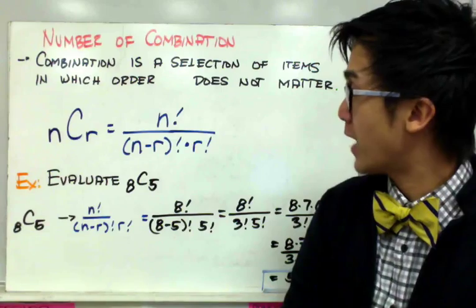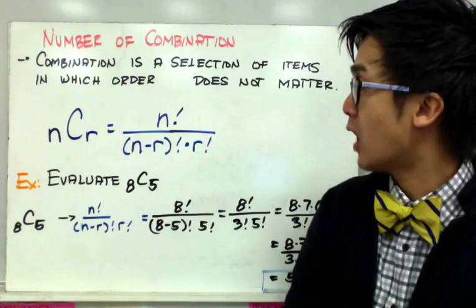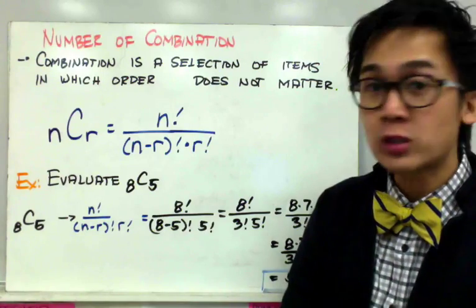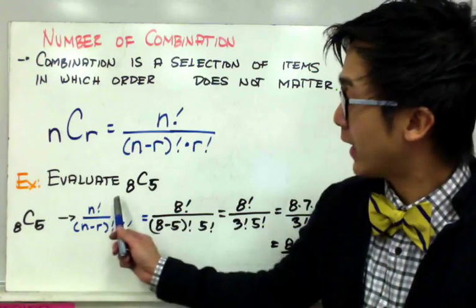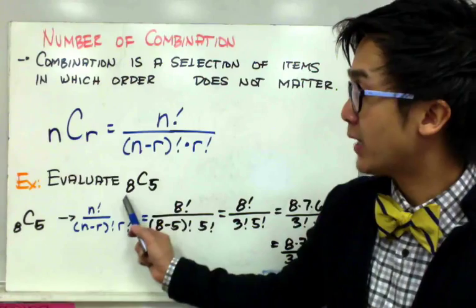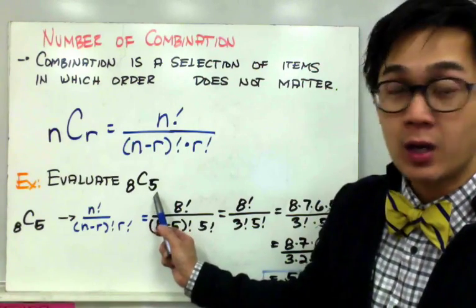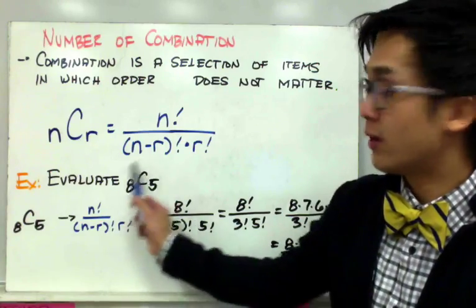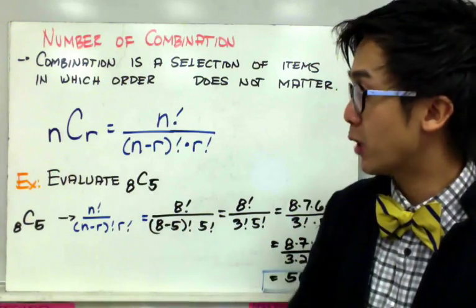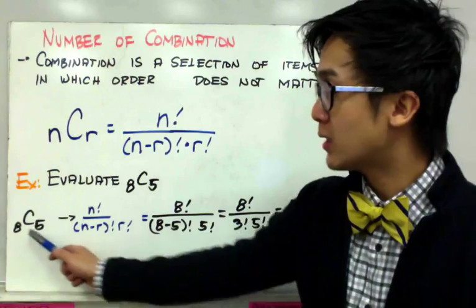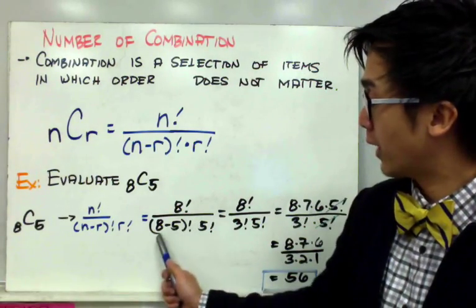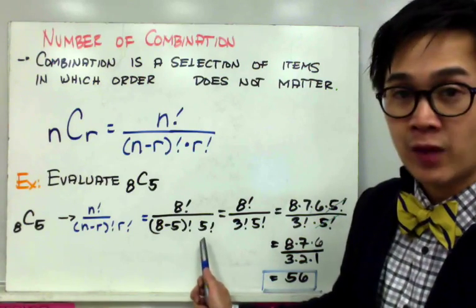It's given by the formula n factorial over n minus r factorial times r factorial. If we're going to evaluate the combination of 8 taken 5 at a time, using direct substitution we'll be able to solve this problem. So 8C5 equals 8 factorial over 8 minus 5 factorial times 5 factorial.